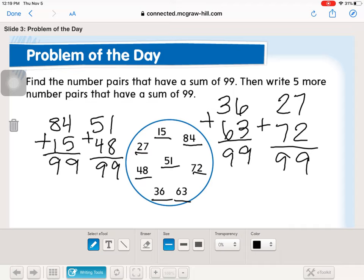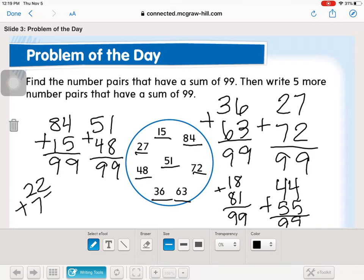So a few more that you may have figured out are 18 and 81. This one's kind of similar to 36 and 63. We also have 44 plus 55.